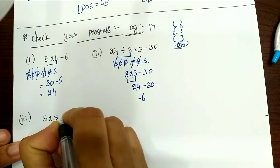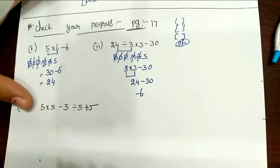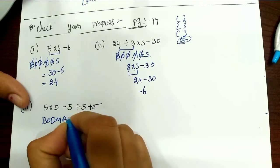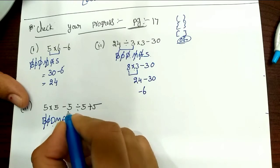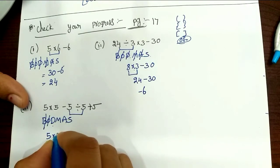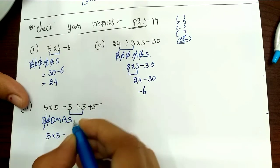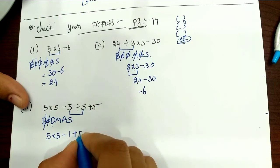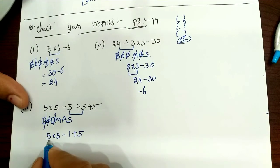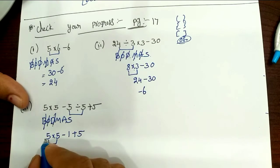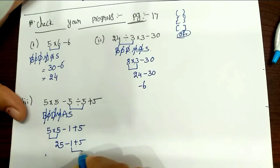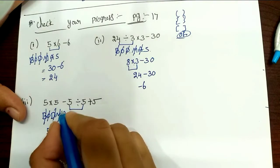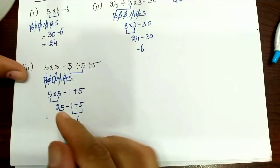Third one, last one: 5 into 5 minus 5 divided by 5 plus 5. Here is the same — first multiplication: 5 into 5 so 25. Next, minus 1 plus 5; multiplication is equal to 5 divided by 5 equals 1. Next, addition: 1 plus 5 is equal to 6. Before, 25 is equal to minus. This is equal to 6. Last subtraction: 25 minus 6 is equal to 19.